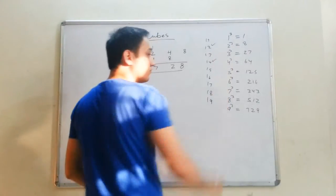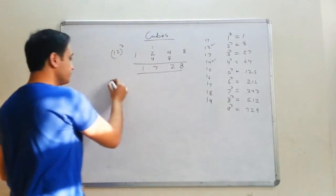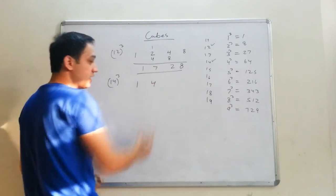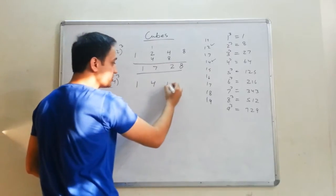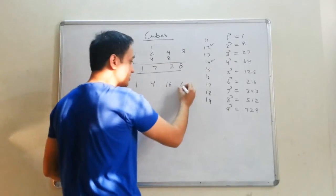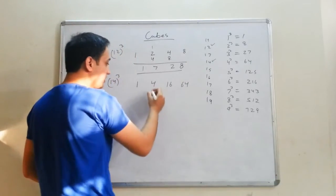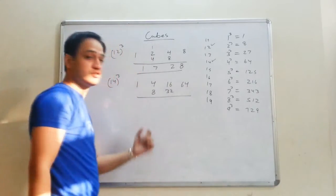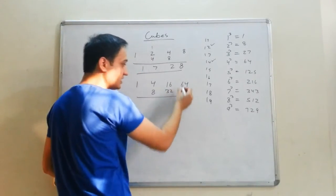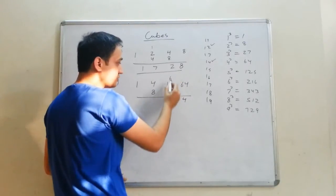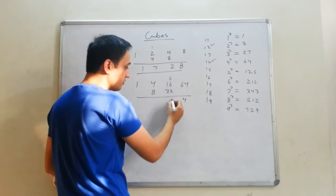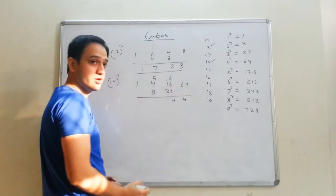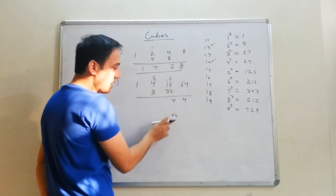Now if I have to do a cube of 14, I'll write 1, then 4. Now I'll write square of 4, which is 16. Now cube of 4, which is 64. Double these digits: 8 and 32. Now add all these digits. 8 plus 4 — I'll write 4, carry 1. 6 plus 6 is 12, plus 2 is 14. Write 4, carry 1.